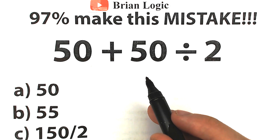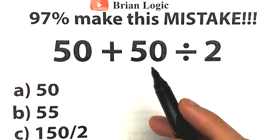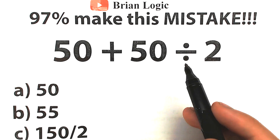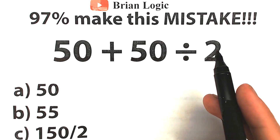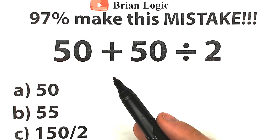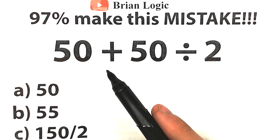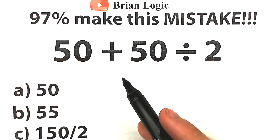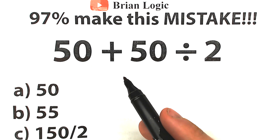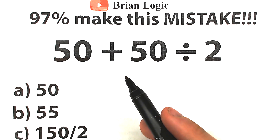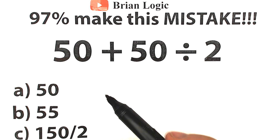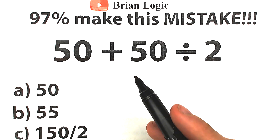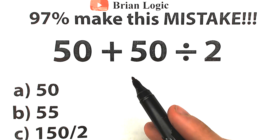Welcome to BrainLogic. Let's figure out this super simple math problem: 50 plus 50 divided by 2. It seems pretty basic — we have simple addition and simple division, things everyone learned in third grade. However, many people will get this wrong. Try to solve it without a calculator and put your answer in the comments. We have three options: A, B, and C.